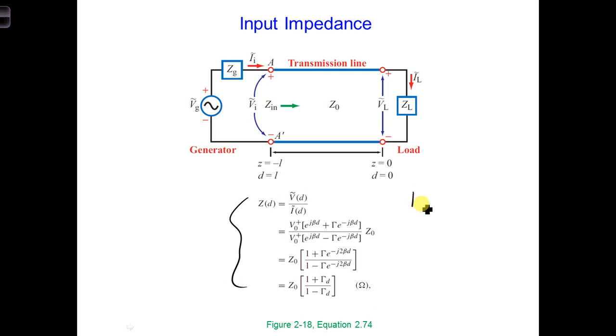First, we know that the voltage and currents are periodic. And two, we also saw that Zin is periodic.